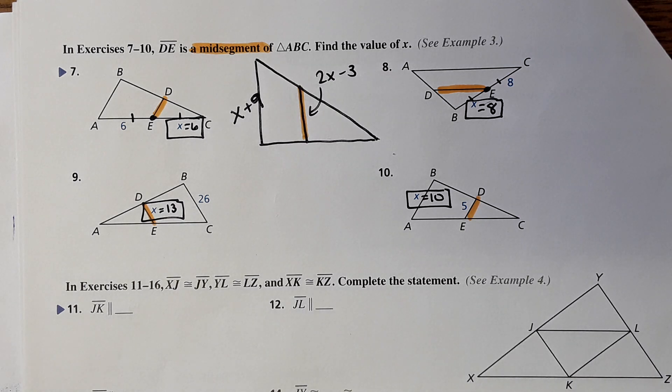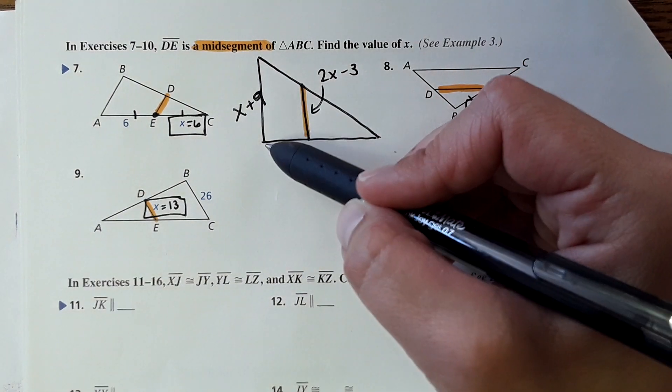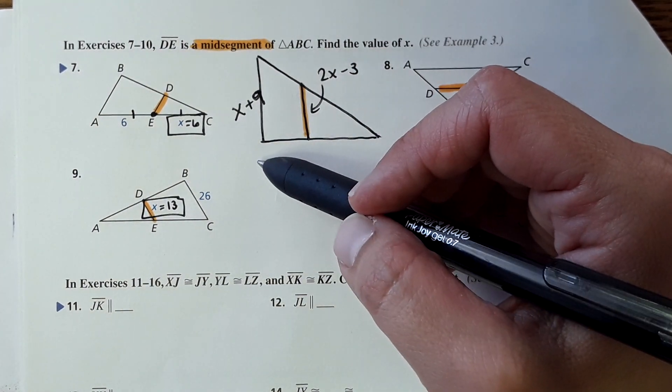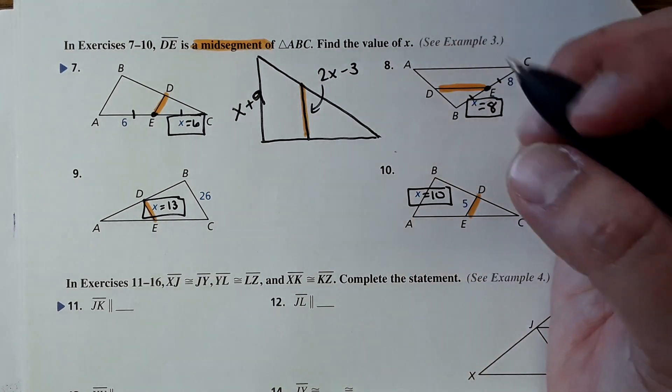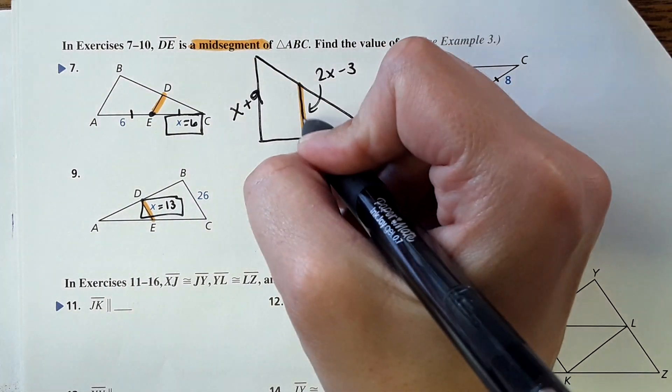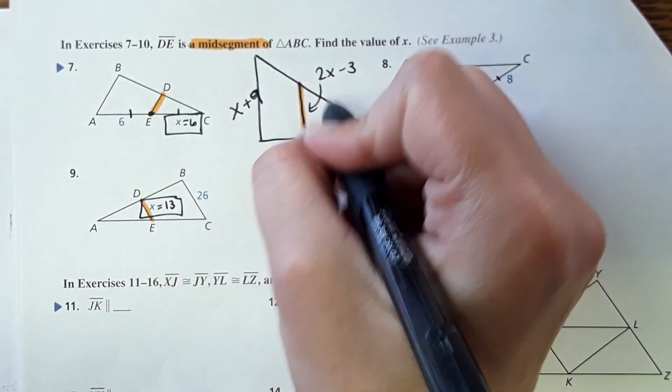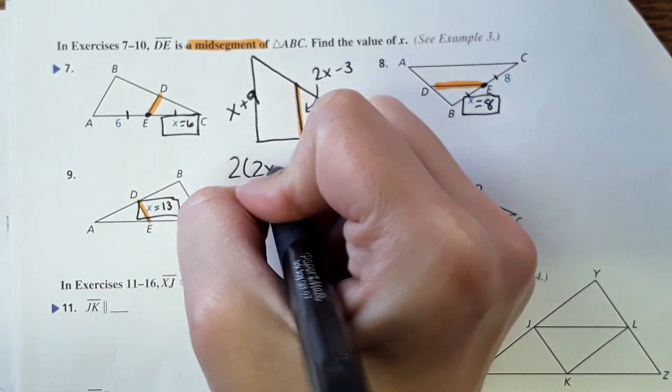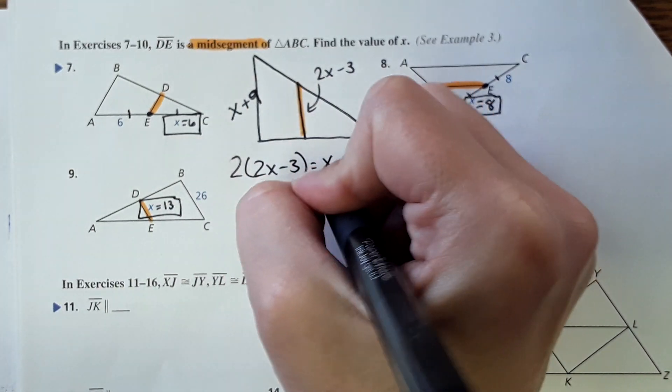Okay, so here they bring in an expression, but the same rules still apply. This is half of the length of this. I don't like using fractions, so I wouldn't use half - I would actually use two. So two of these would equal this. So that's how I'm going to set it up: two times two x minus three equals x plus nine.